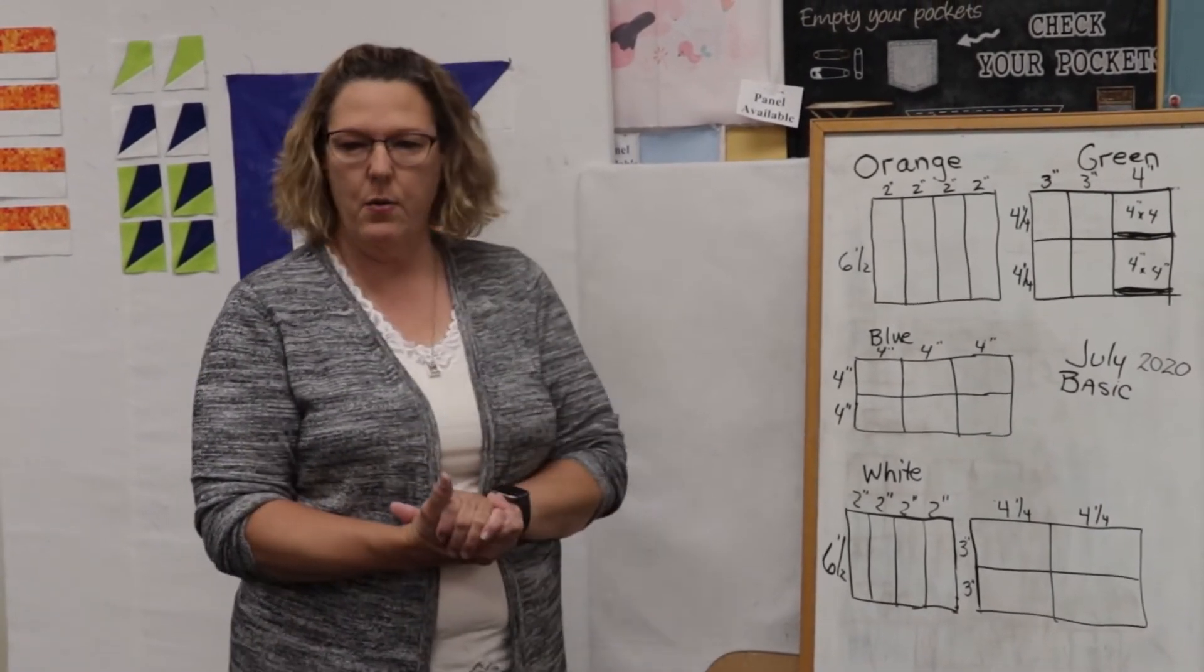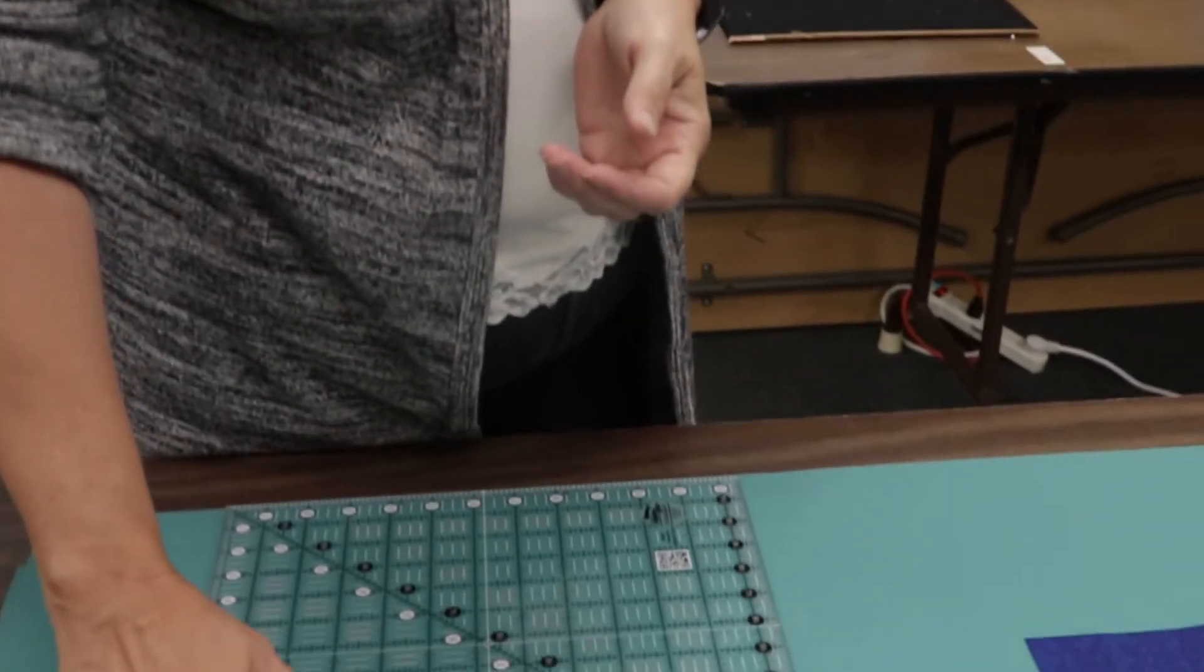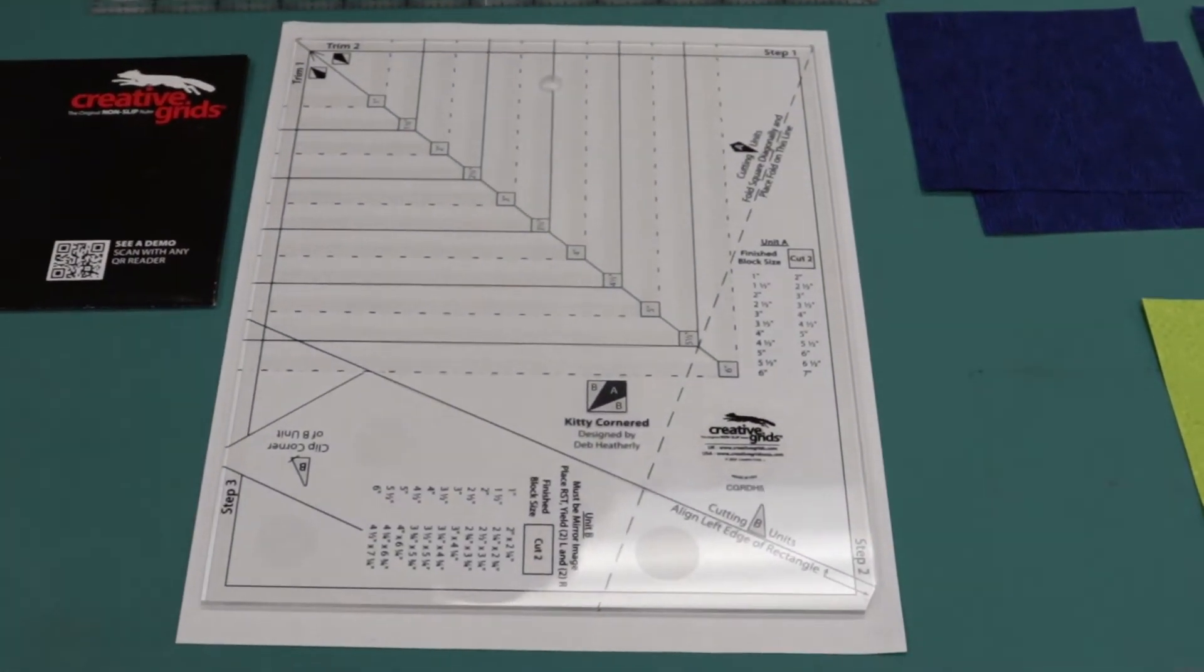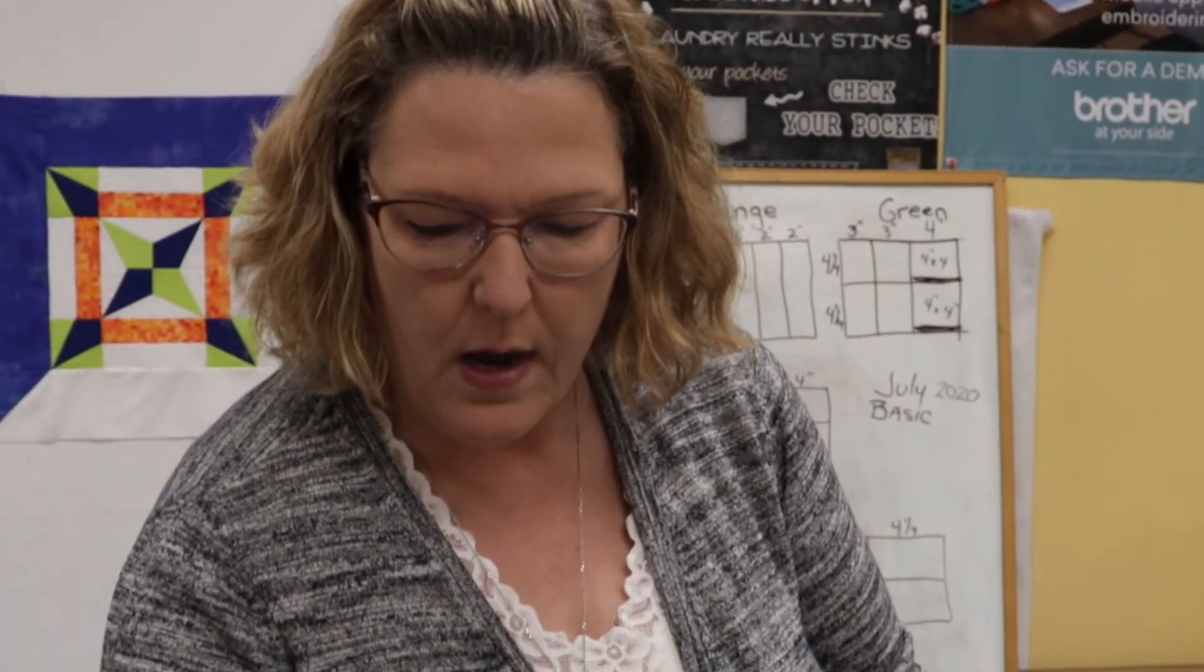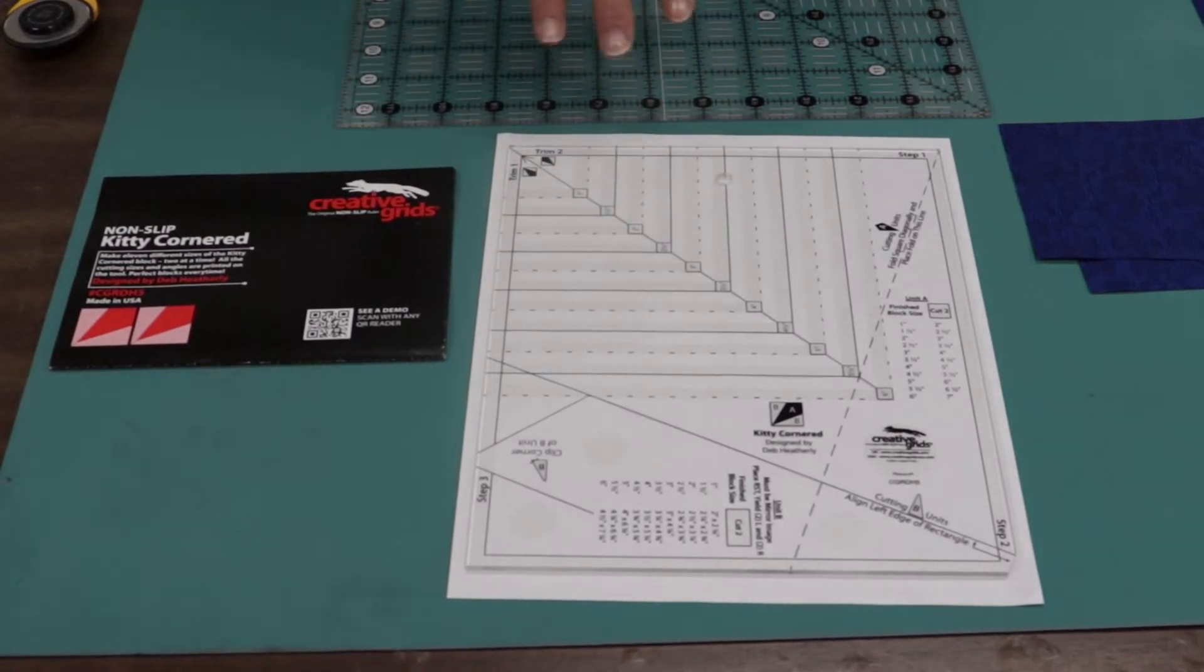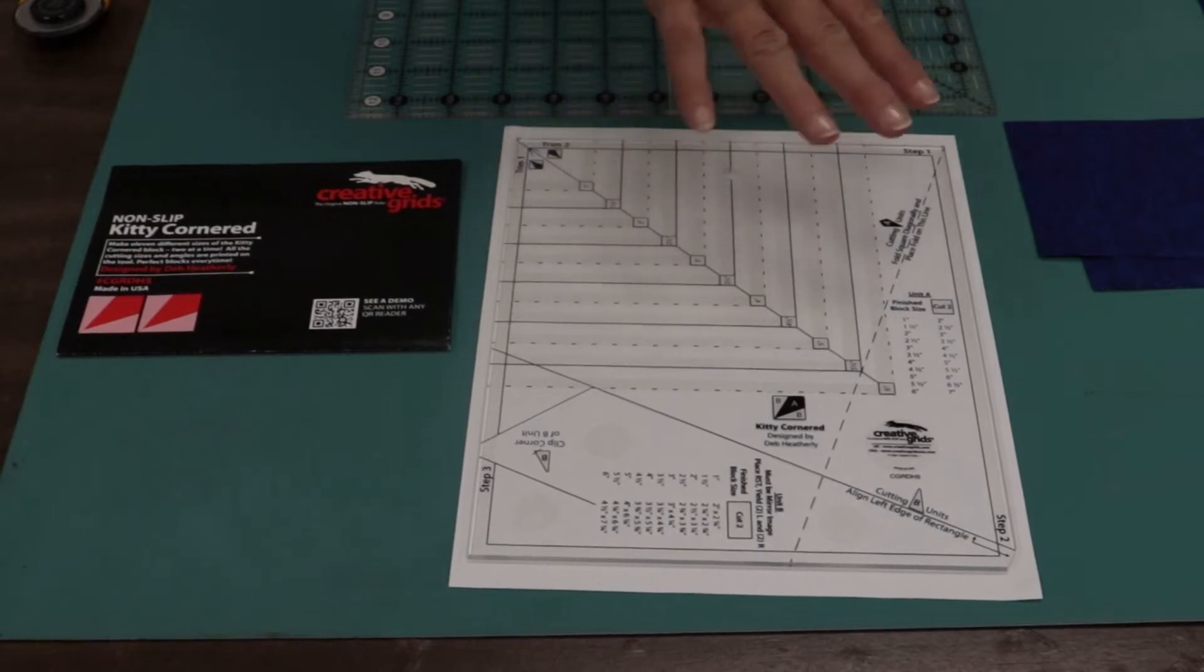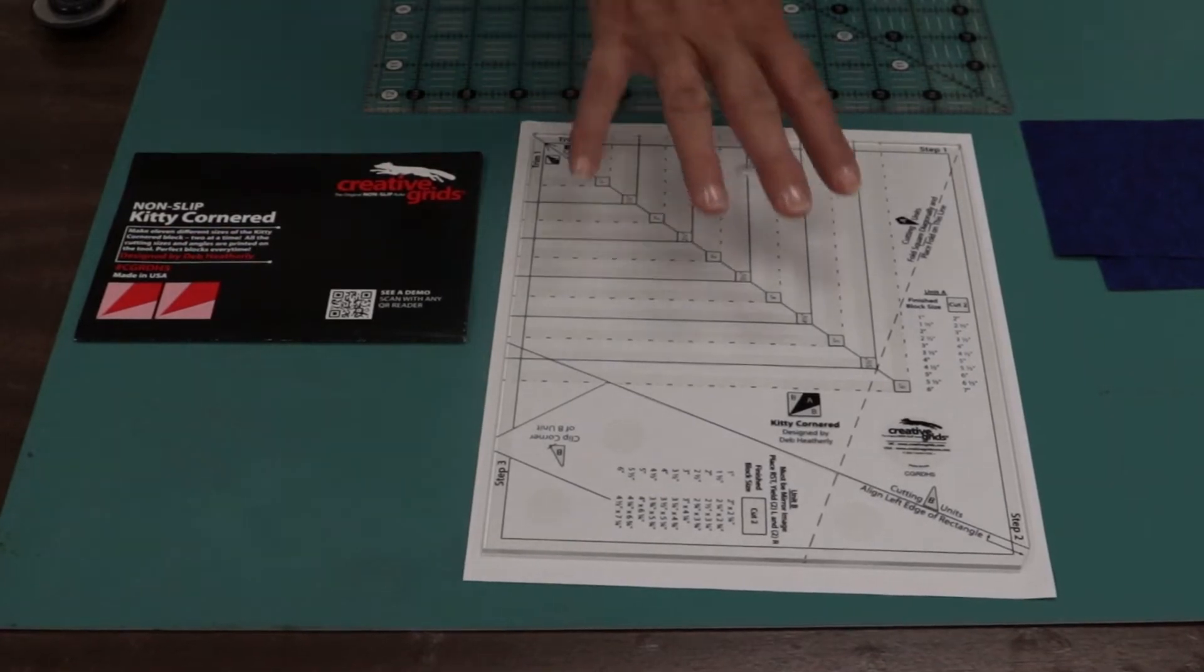So what I'm going to do now is show you the ruler. It's called the Creative Grid Kitty Cornered Ruler. And if you go to the Creative Grid website and search for the Kitty Corner, they not only have another copy of the directions, but they have a fabulous video that shows you the different things that you can make with this, as well as the instructions on how to use it again. So if you can't find my video, for instance, please go to the Creative Grid and find it there.